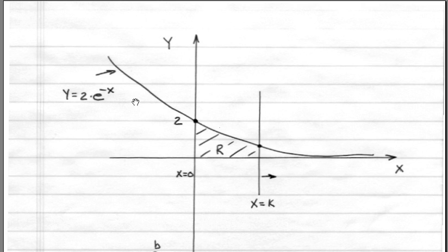We see that this curve intersects the y-axis at y equals 2. The second curve is x equals k, a vertical straight line. The intersection of y equals 2 times e to the minus x and x equals k is right here.